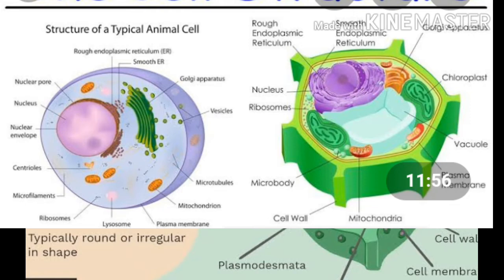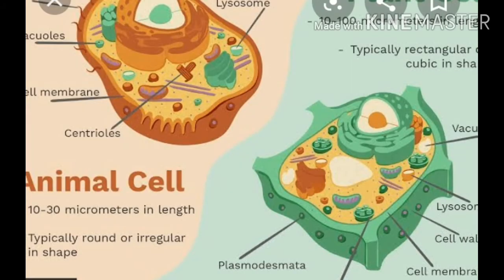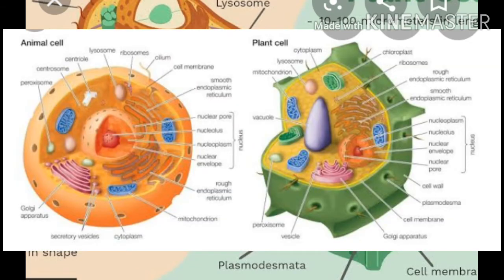In animal cells, food is stored in the form of oil and glycogen. In plant cells, reserve food occurs generally in the form of starch. In animal cells, lysosomes are present, but in plant cells dictyosomes are present. In animal cells, mitochondria are generally more in number; in plant cells they are fewer. In animal cells, crystals are usually absent but in plant cells they are usually present. In animal cells, contractile vacuoles may be present for osmoregulation (water balance); in plant cells no contractile vacuoles are found. In animal cells, the nucleus is usually central, but in plant cells the nucleus is eccentric due to the presence of a large vacuole.